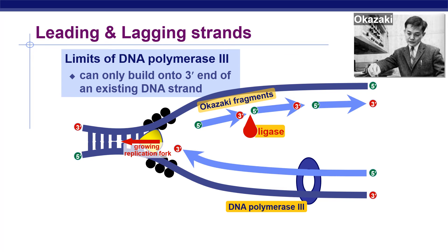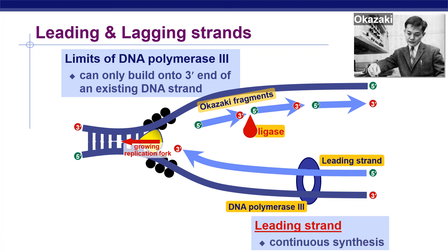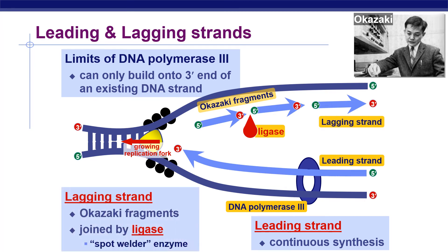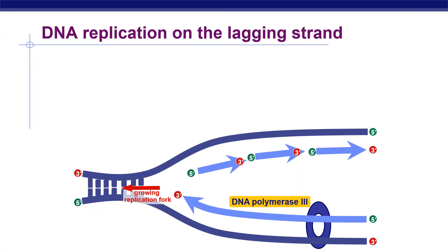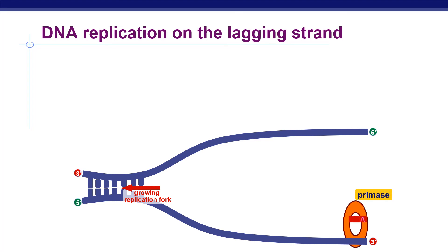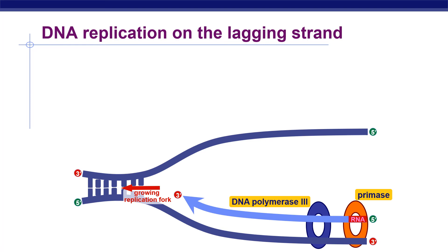Due to the limitation of DNA polymerase III — it can only build onto the 3 prime end of an existing strand — the 5 prime to 3 prime strand is the leading strand, which is continuous, while the lagging strand has Okazaki fragments joined by ligase, also known as the spot-welder enzyme. On the lagging strand, DNA polymerase III completes synthesis of one fragment, and when it reaches the RNA primer on the previous fragment, it dissociates, moves to the replication fork, and adds DNA nucleotides to the 3 prime end of the next primer.